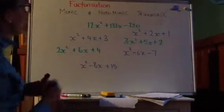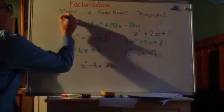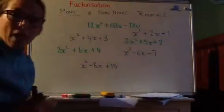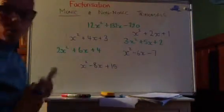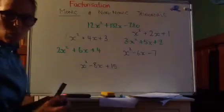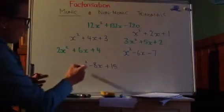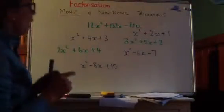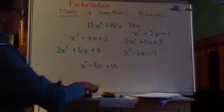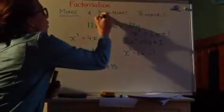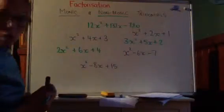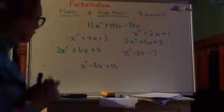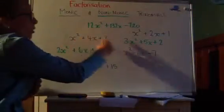Now the blue ones are all monic trinomials and they're monic trinomials because the coefficient of x² - the number in front of x² - is one. Whereas the green ones are non-monic because the coefficient of x² is not one.